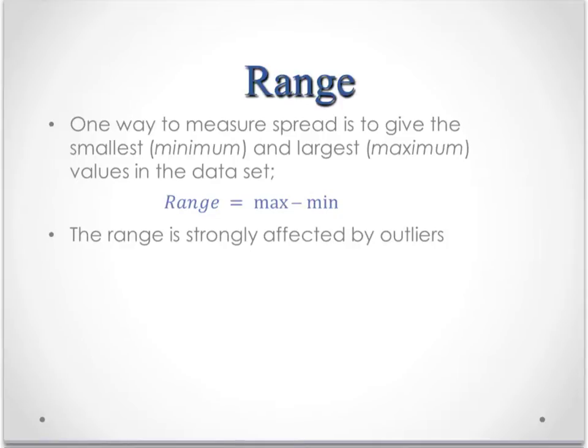Now the range is really strongly affected by outliers. Because what if you had all of your data between 80 and 95, except for that 1 value of 5? Well that 5 is telling you that the range is now 90, but everything else is in a much smaller range between 80 and 95.